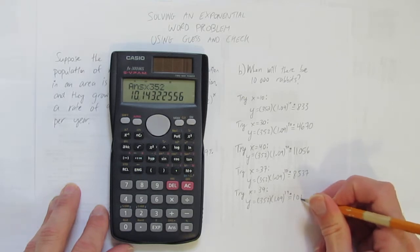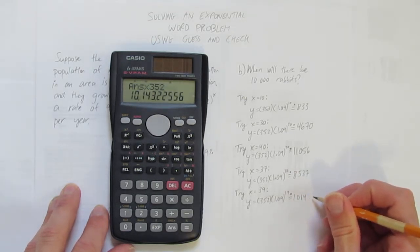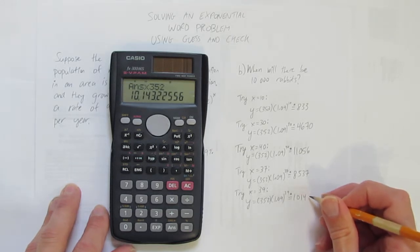Again, I round down, but I notice I'm over 10,000 still. 10,143.